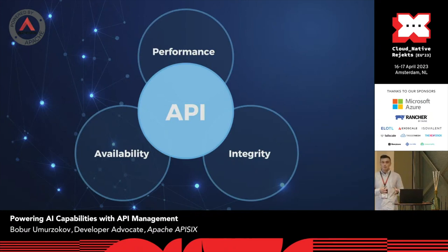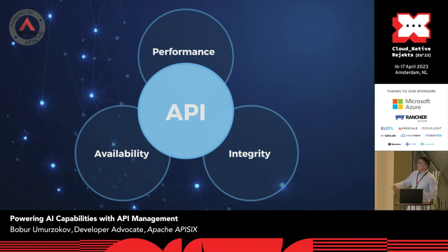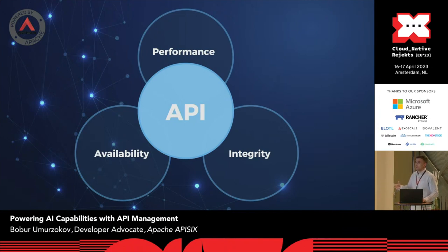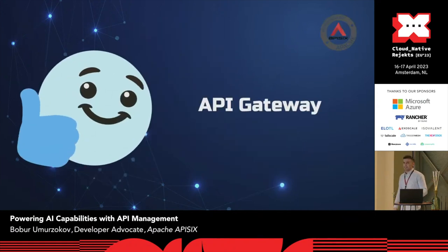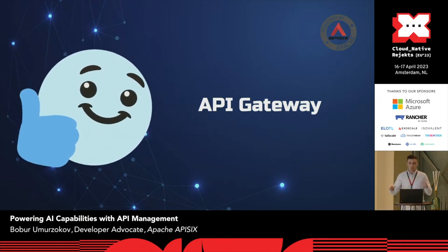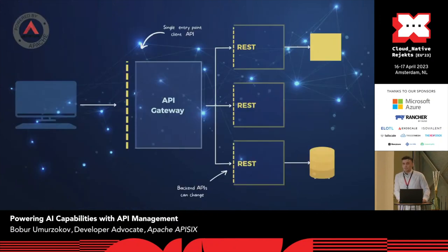The success of any service nowadays using an API-first approach depends on performance, availability, and integrity of your APIs. This raises the question: how can we achieve these three indicators of success? There are many ways — we need to continuously monitor, deploy somewhere in the cloud, and so on. My solution is using an API gateway, one way of achieving these three indicators.